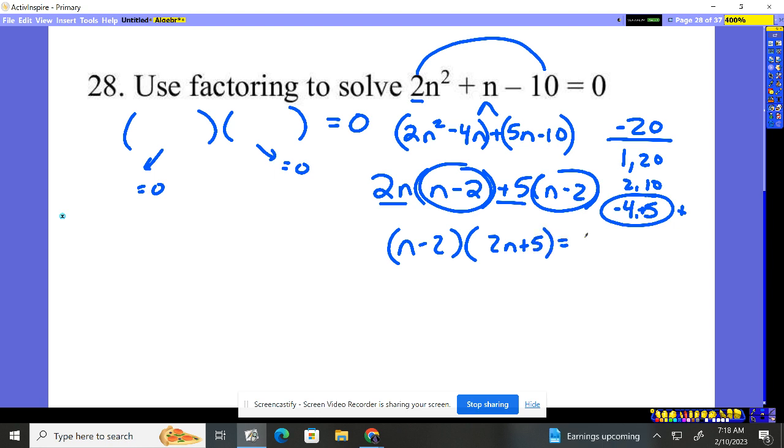Now we set that equal to zero, and we set each piece. Either n - 2 has to be zero, or 2n + 5 has to be zero.